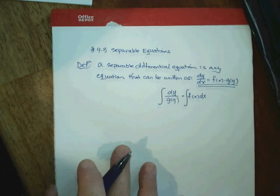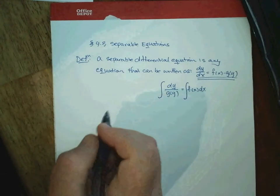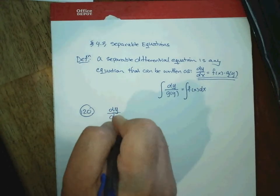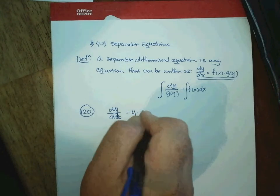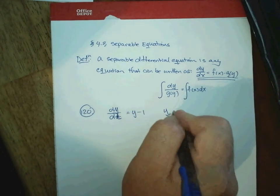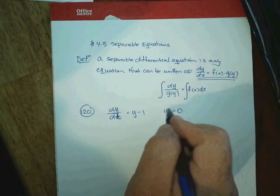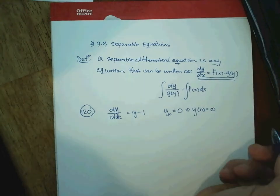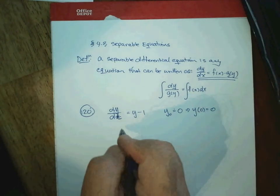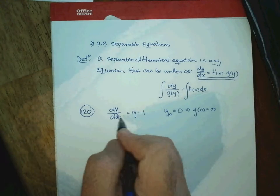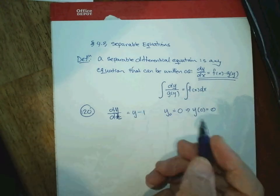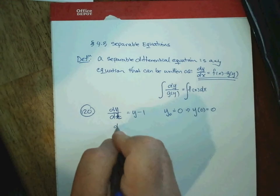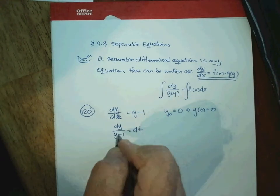Let's start with problem number 120, where we're given the equation dy/dt = y − 1, with the initial condition y(0) = 0. This initial condition says that when t is 0, the value of y is 0. This is a separable differential equation simply because we don't have any t's on the right-hand side, so we divide both sides by y − 1 and move the dt up, separating the equation.